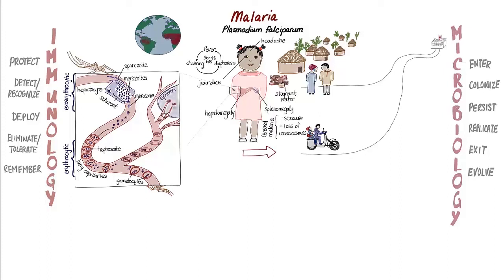Infected red blood cells that circulate through the body are usually destroyed by the spleen — this is why Farida's spleen was enlarged when she was first examined. But the Plasmodium falciparum parasite tries to avoid this fate by expressing adhesive proteins on the surface of infected red blood cells. This gives the parasite a better opportunity to replicate because infected red blood cells will stick to the walls of small blood vessels and thereby avoid destruction in the spleen. Unfortunately for Farida, this led to the blockage of many small vessels in her brain, causing her seizure and other neurological symptoms.